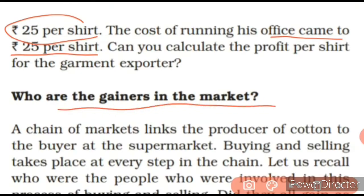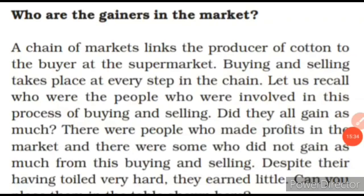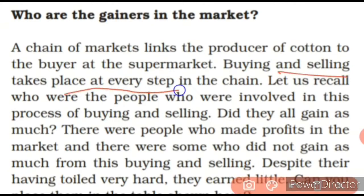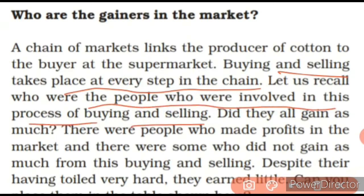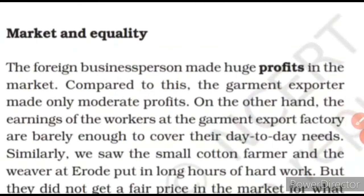Who are the gainers in the market? In the market, buying and selling both take place — people are buying and selling. Buying and selling takes place at every step in the chain. Let's recall who were the people involved in this process of buying and selling — who are those doing this kind of selling and buying? Merchants. Did they all gain as much? There were people who made profits in the market and there were some who did not gain as much. Those who got the benefit of sale and purchase — who were they? Merchants. And those who did not get much benefit — who were they? Workers — who prepare and work hard, but the benefits go to the merchants.